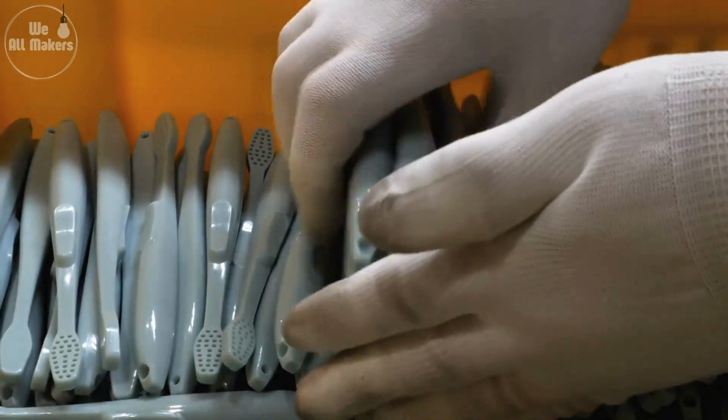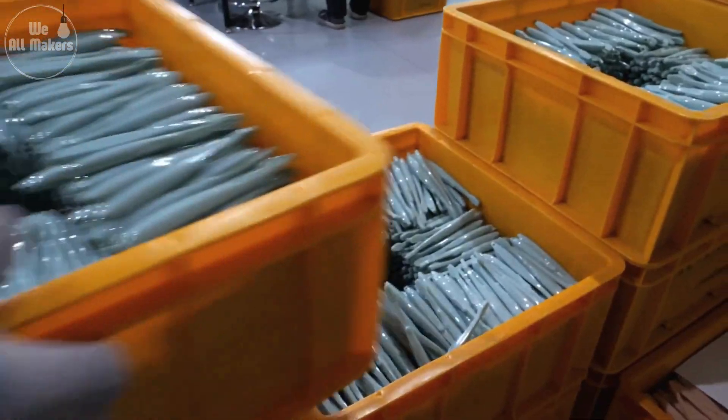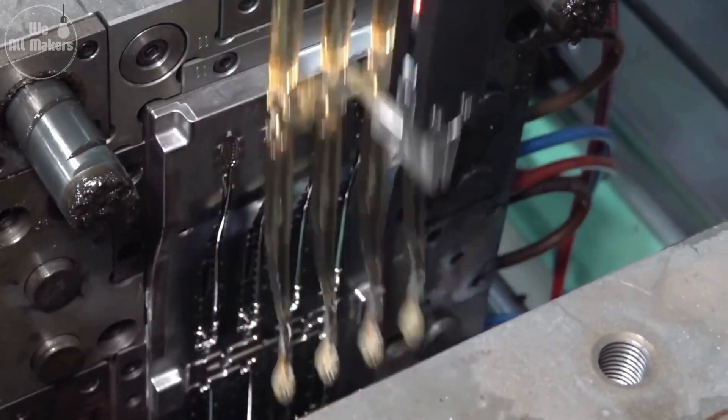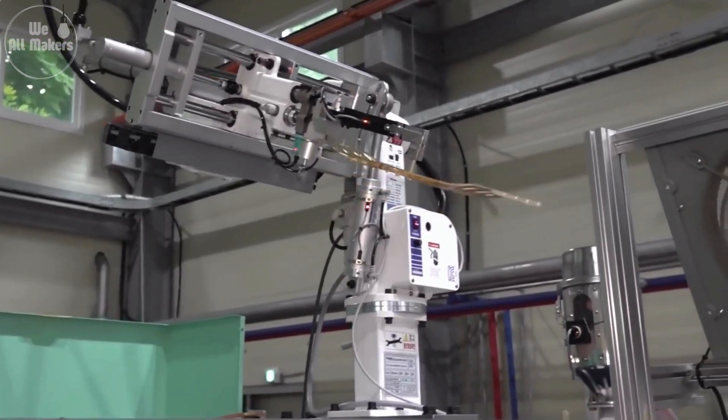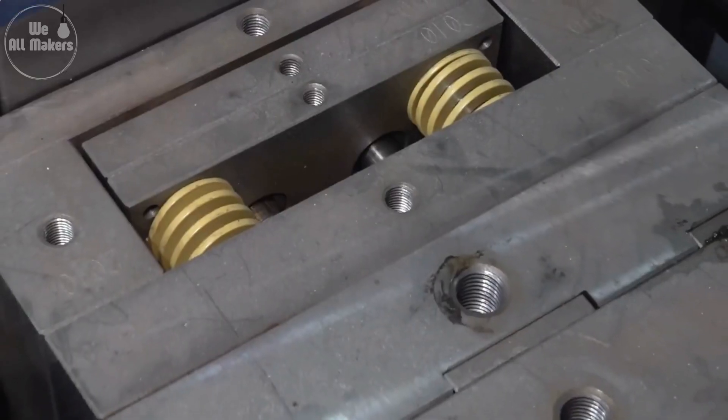Did you know that in some factories, the entire process of molding a toothbrush handle takes just a few seconds? The high-tech molds used can produce up to 20 handles at once, all perfectly identical.